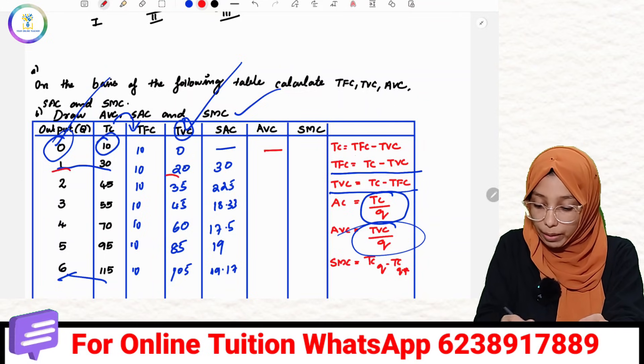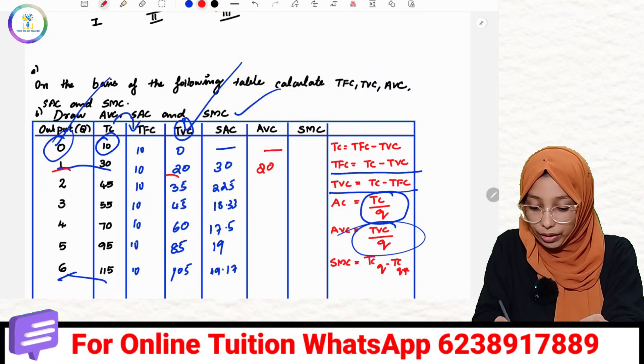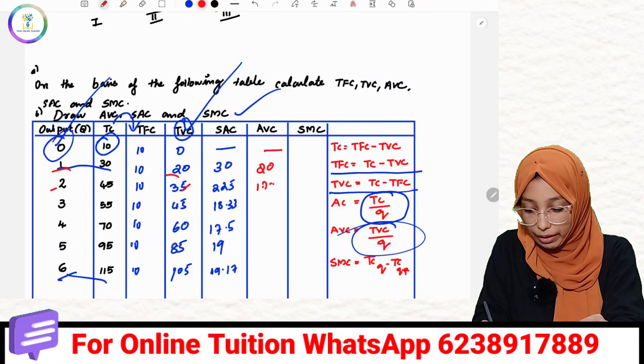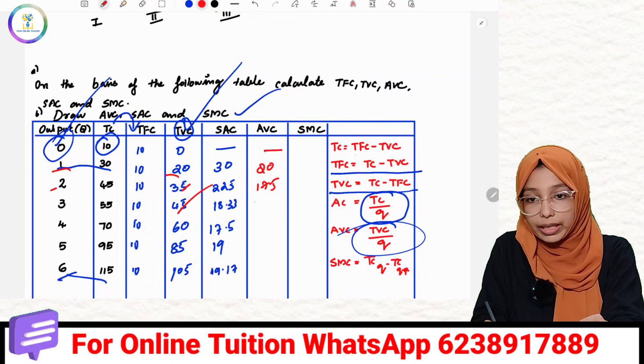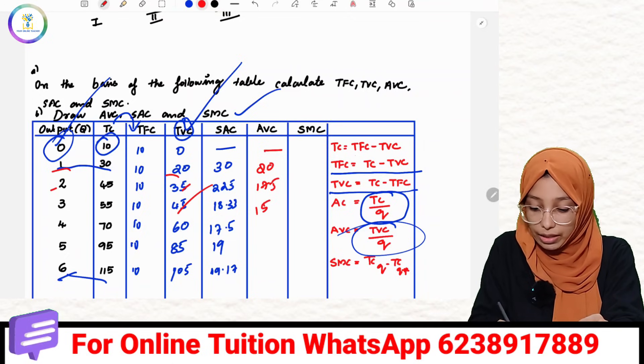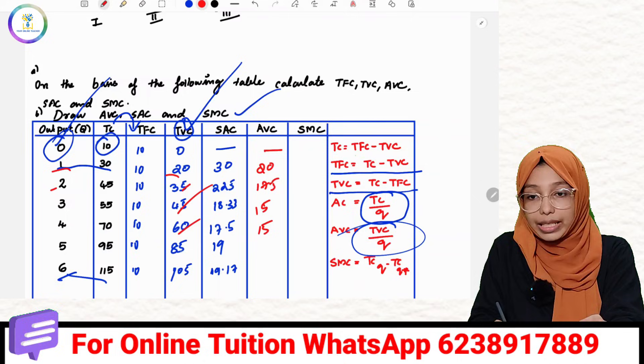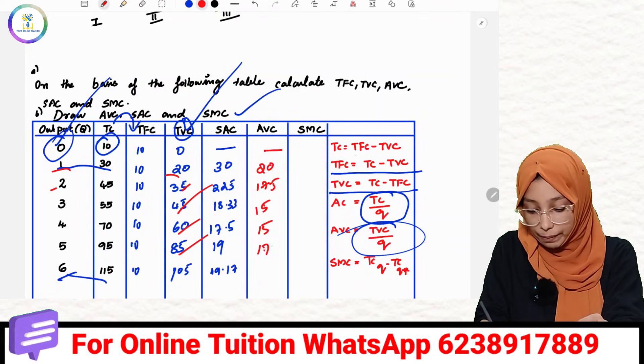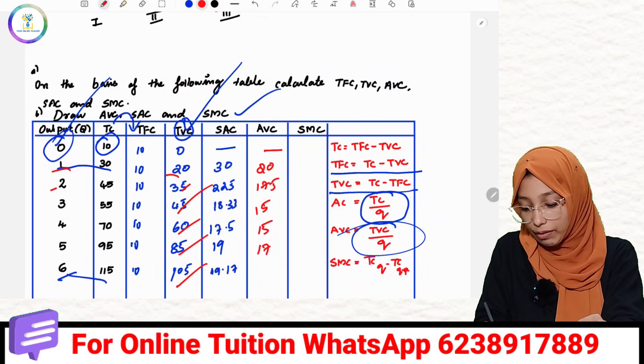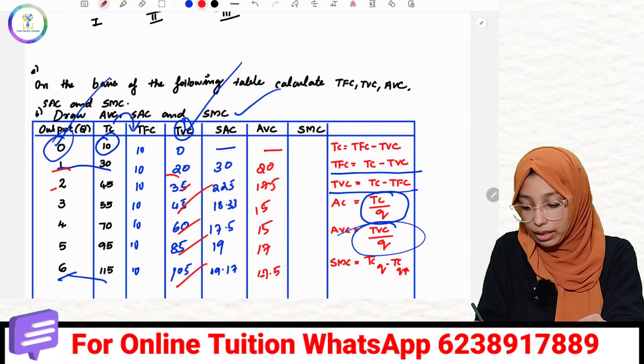20 divided by 1 is 20, 35 divided by 2 is 17.5, 45 divided by 3 is 15, 60 divided by 4 is 15, 85 divided by 5 is 17, 105 divided by 6 is 17.5.